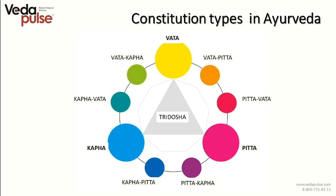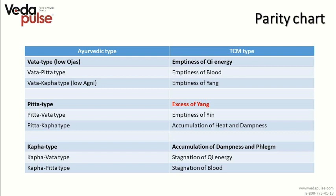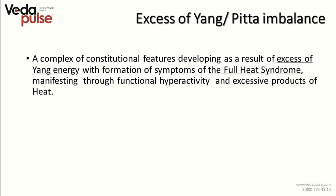The set of characteristics is determined by a certain combination of three regulation systems: Vata, Pitta and Kapha Doshas. They form nine subtypes and the tenth type is the ideal combination or balance of Doshas, called Tridosha. Here you can see the same combinations presented as notions of traditional Chinese medicine. Highlighted in red is the type we are going to discuss today — the Pitta type or excess of Yang.